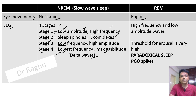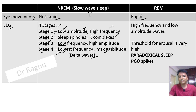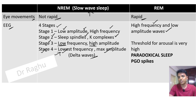Because of the lowest frequency, NREM sleep is also called slow wave sleep. In REM sleep there are no stages; the only thing we see is that the waves are very high frequency and low amplitude.